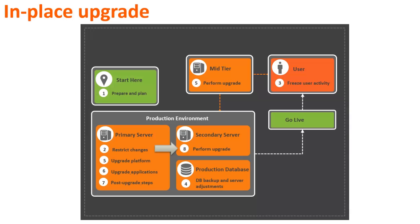It is recommended that you use the copy of the upgraded primary BMC Remedy AR system server and BMC Remedy mid-tier to create the secondary servers. However, if you want, use the installers to upgrade the secondary. Stage 9 is the final stage where you go live. Perform the go live activities and remove the production URL from the maintenance mode.